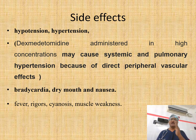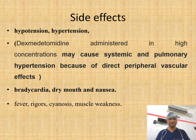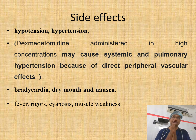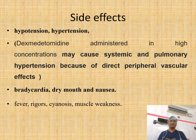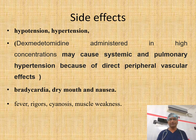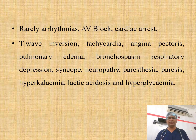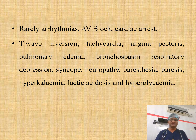Regarding side effects: at high concentrations, dexmedetomidine may cause systemic and pulmonary hypertension because it acts directly on peripheral blood vessels via alpha-1 stimulation. The main side effects are hypotension, bradycardia, dry mouth, and nausea. With high doses, alpha-1 activation can cause hypertension. Rarer side effects include arrhythmias, AV block, T-wave inversions, angina, neuropathy, syncope, and paresthesia. However, all these are rare in ideal clinical practice.